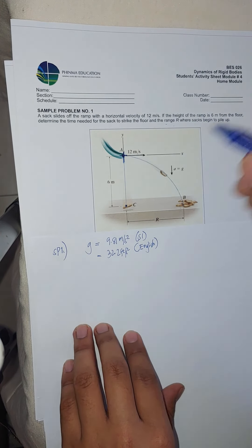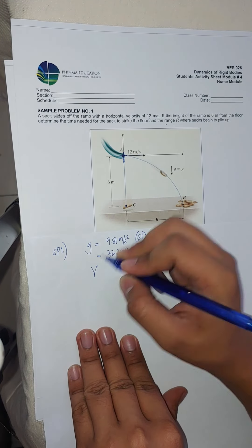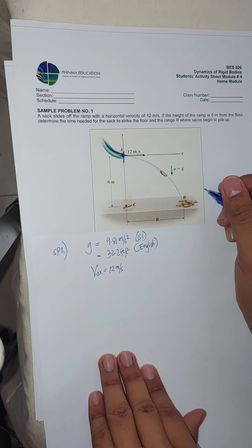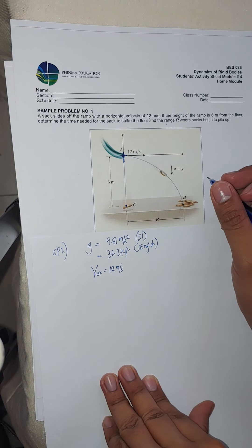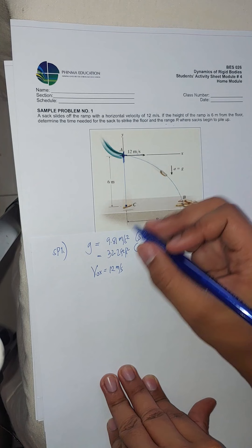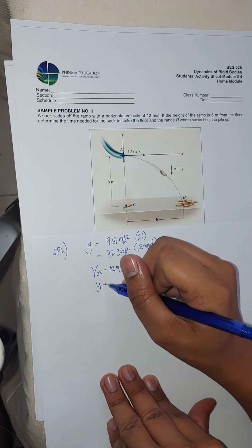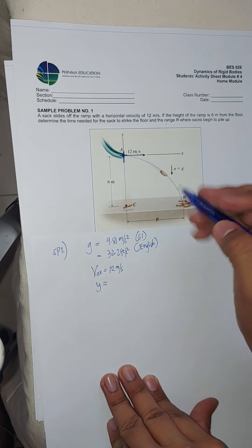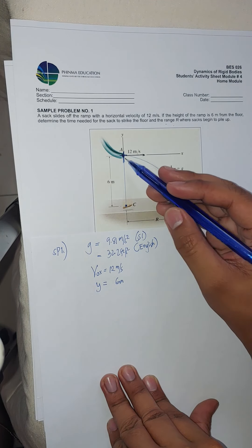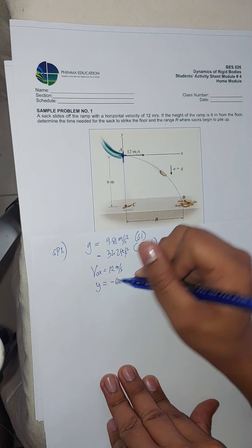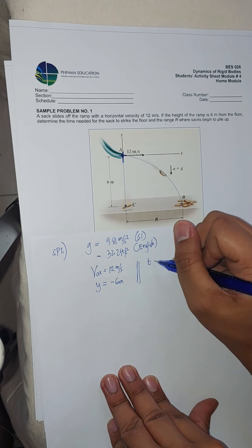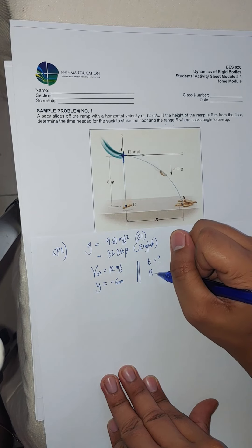We are given the initial velocity along X equal to 12 meters per second, and the total height traveled Y is equal to negative 6 meters, since the sack is going downward from the origin. We are asked to find the total time traveled and the horizontal distance R.